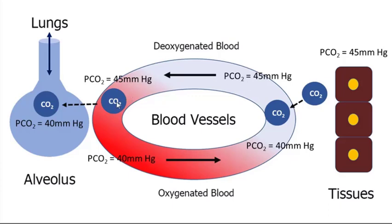Now we have to unload the carbon dioxide from the blood to the lungs, so we need another partial pressure gradient — and we do. The PCO2 in the blood is about 45 millimeters of mercury, and the PCO2 in the alveolus is a little less, about 40. Carbon dioxide moves down its partial pressure gradient, diffuses into the lungs, and is removed by exhalation. This drops the PCO2 down to 40 and the process starts all over again. Hopefully you've learned something about the movement of oxygen and carbon dioxide between the lungs, blood, and tissue using partial pressures. See you next time.